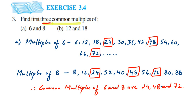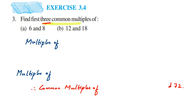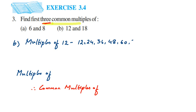Now the same way we have to do for the other numbers, that is 12 and 18. Let me erase this. We are going to find the multiples of 12 and 18 and then find the common multiples. Multiples of 12: 12, 24, 36, 48, 60, 72, 84, 96, 108, 120, and so on.